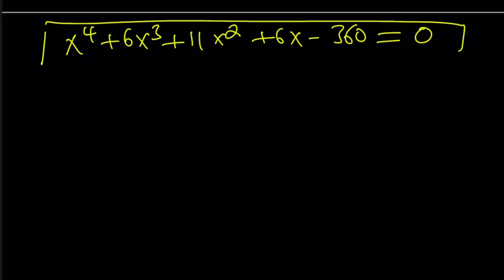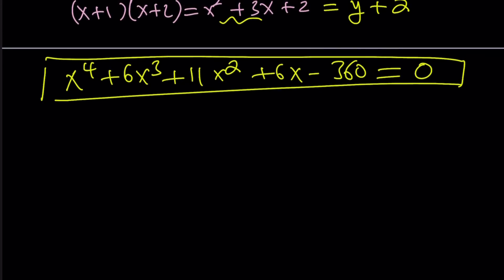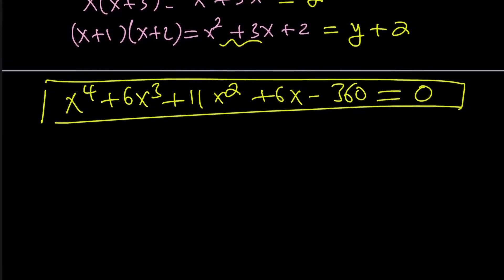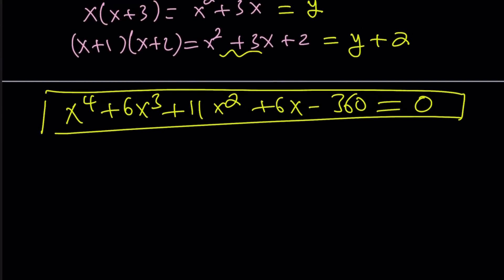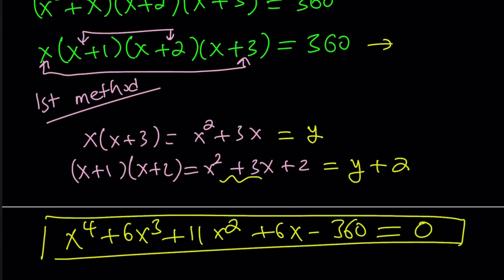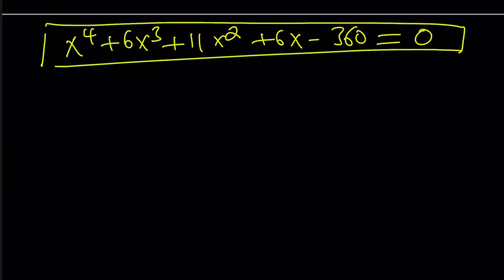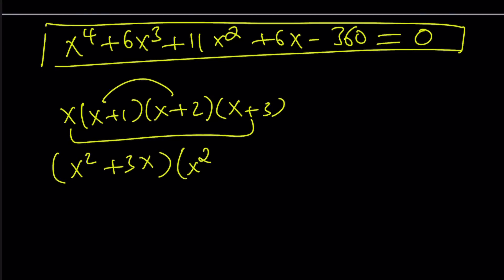You don't want to go the quartic route, hopefully. If you do, be my guest. Use the link and solve it. You can verify that way. But it's not recommended. Let's get back to this. So I have this product where I was able to simplify this. Let's multiply first. I turn it into x squared plus 3x multiplied by x squared plus 3x plus 2.